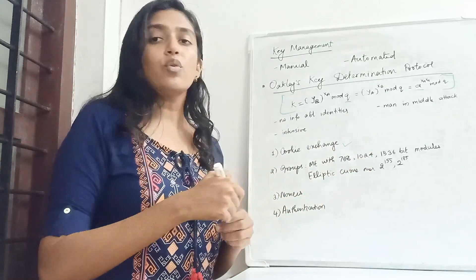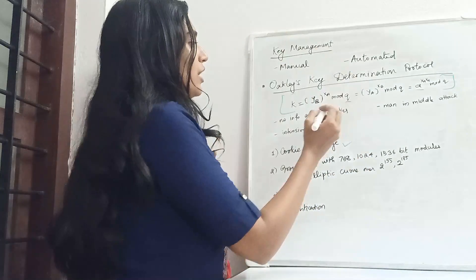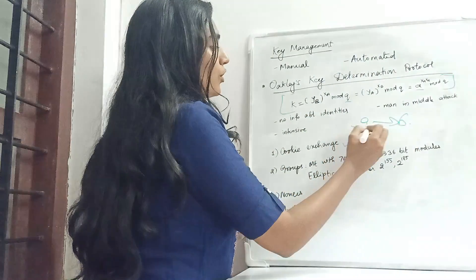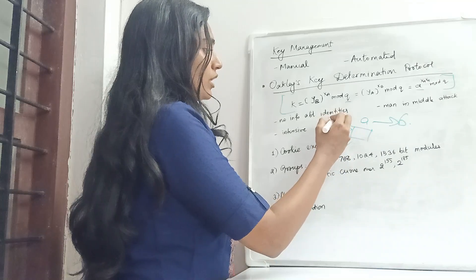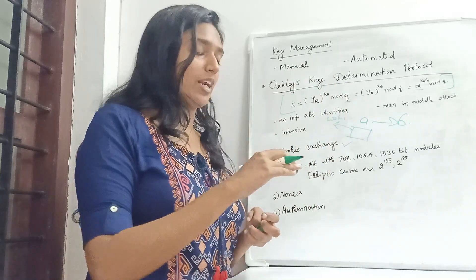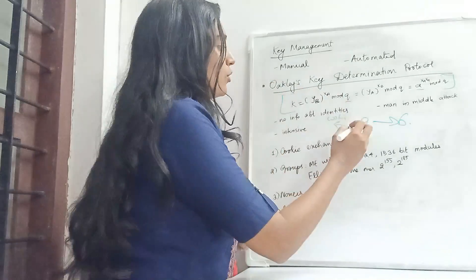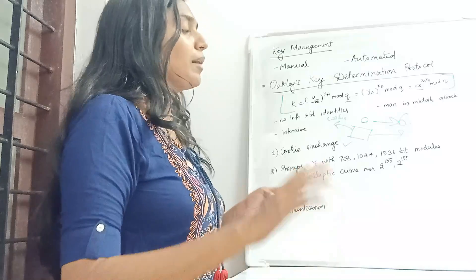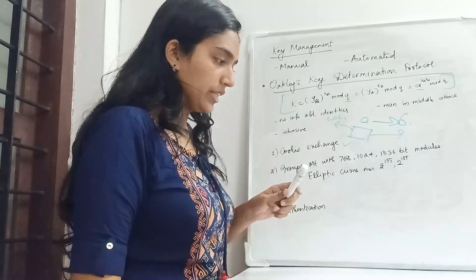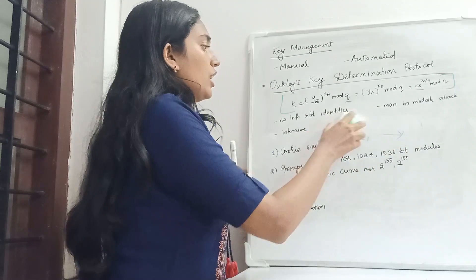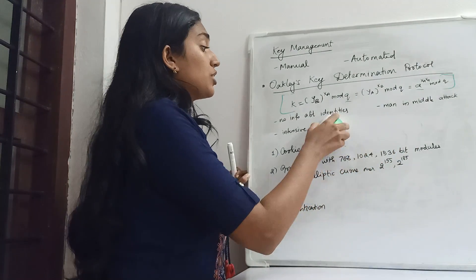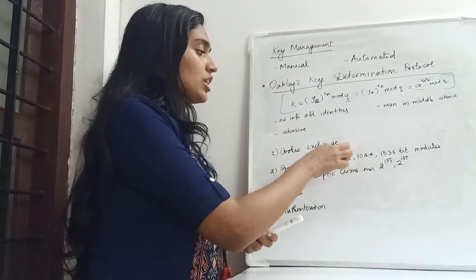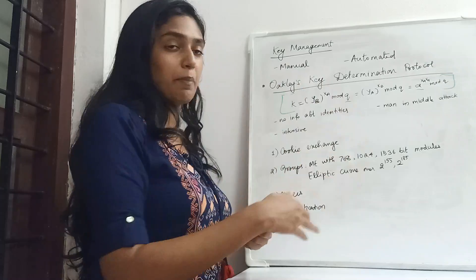The first one is cookie exchange. We have to use a cookie — a random number generally, which is called the cookie. We have to send that cookie, use the cookie to deal with attacks, and then authorize this information. We have to do cookie exchange to apply accountability and check validity.